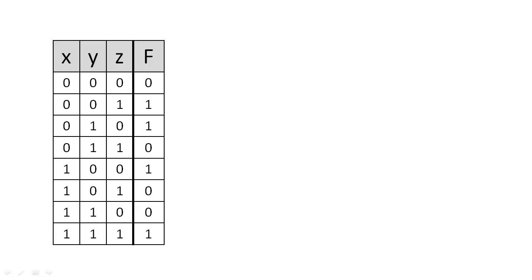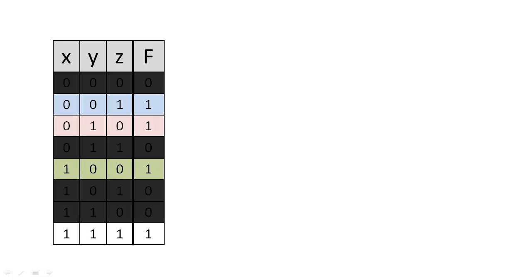When we translate a truth table into a Boolean expression, we normally begin by finding every row that has an output of 1. We can translate these rows into expressions by using a complemented variable when we see zeros and non-complemented variables when we see ones.